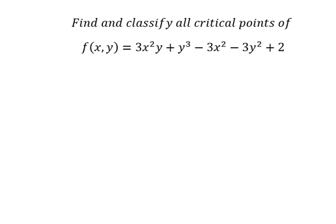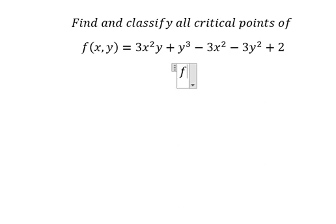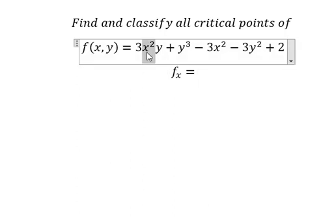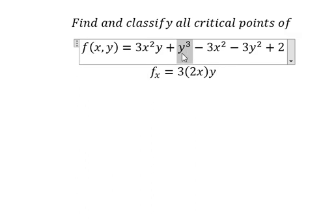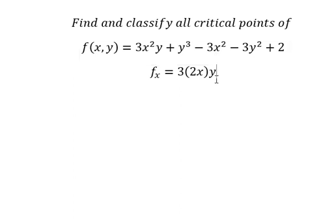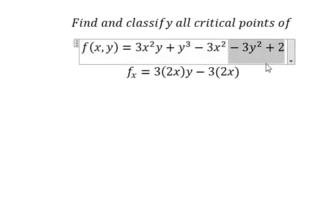The first thing we need to do is find the partial derivative of F with respect to X. This term we have to ask — this one doesn't have X, so you get number 0. This one we have to ask, and this one you get number 0.